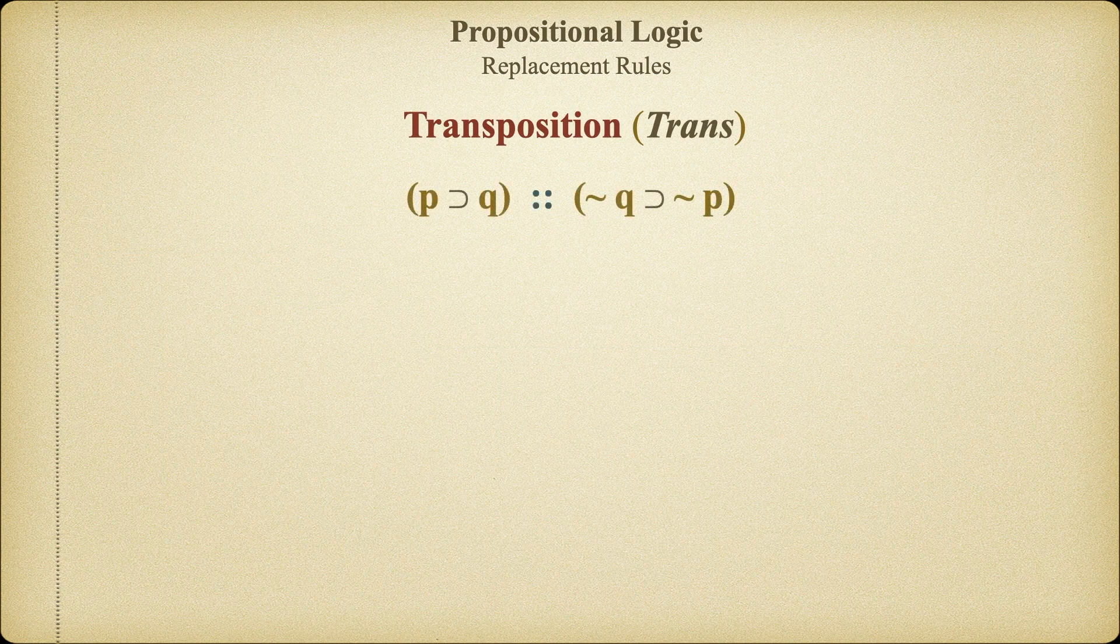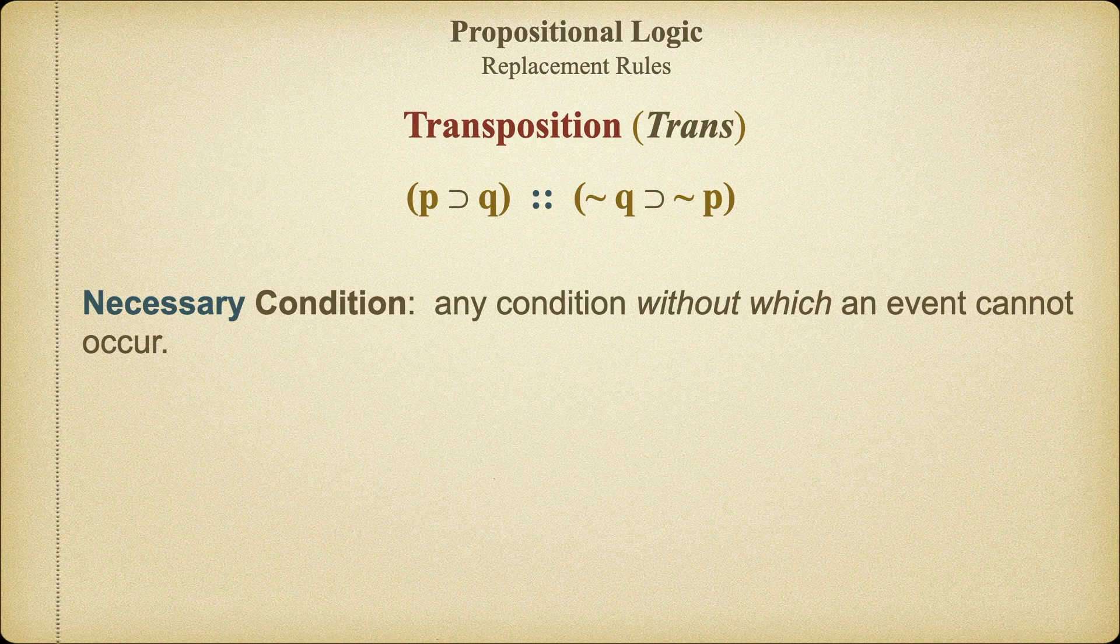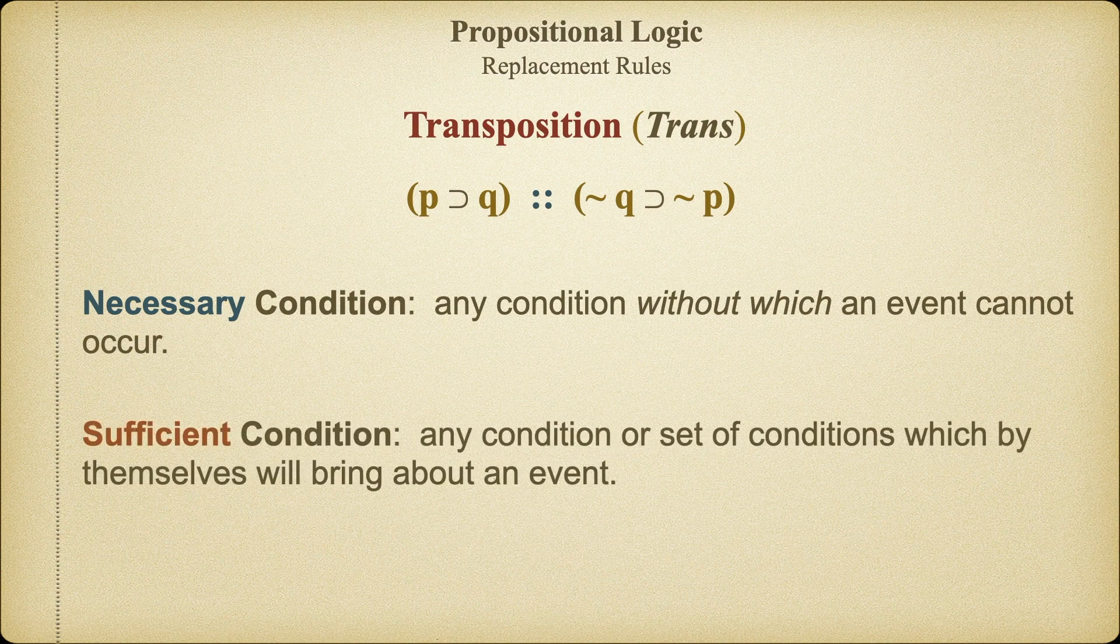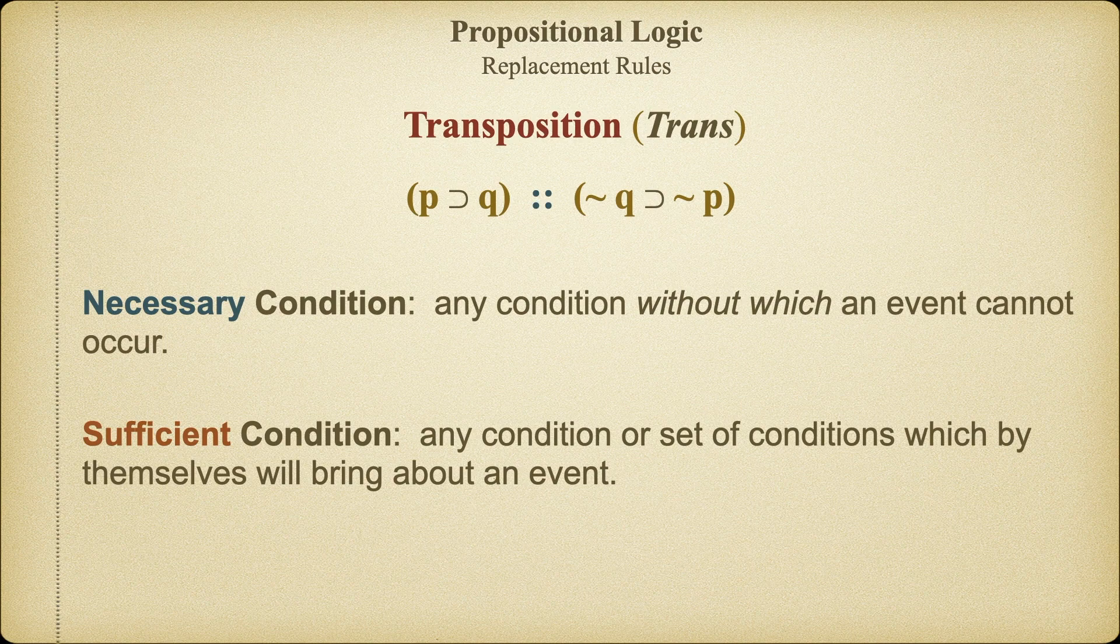Our next replacement rule is really easy to grasp, since we already understand the idea of necessary and sufficient conditions. But, just in case you don't remember, let's have a little refresher. A necessary condition is any condition without which an event cannot occur. A sufficient condition, on the other hand, is any condition or set of conditions that, by themselves, will bring about an event. It will ensure that an event will happen. For example, being exposed to a rhinovirus is a necessary condition for catching a cold because you can't get that particular illness unless you've been exposed. It's a viral infection. However, being exposed to a rhinovirus is not a sufficient condition for catching a cold. After all, you might be able to fight off the infection. A sufficient condition, in our current analogy, would be to both be exposed to the virus and have a significantly compromised immune system. If you're exposed to the virus and you can't fight it off, you'll get sick.